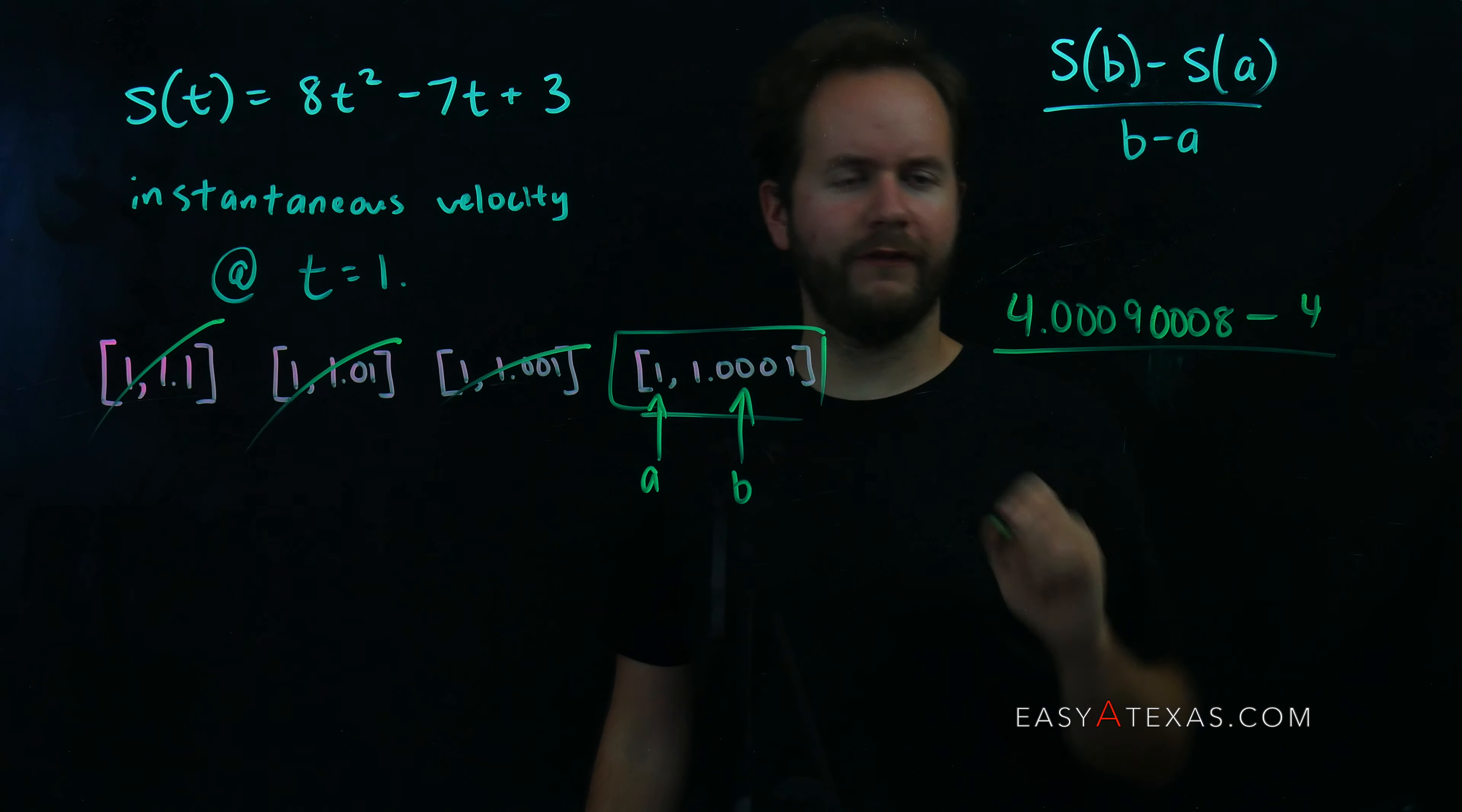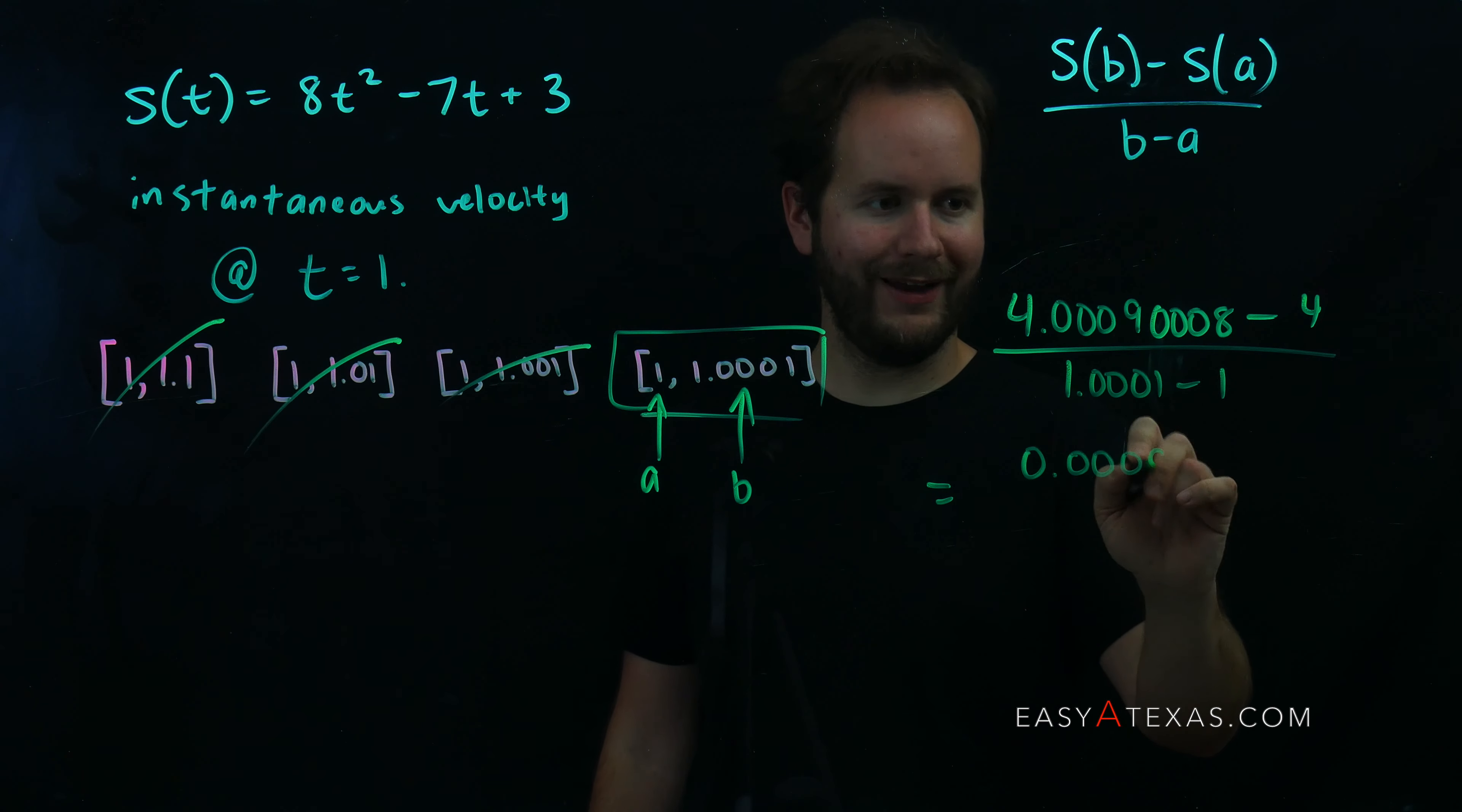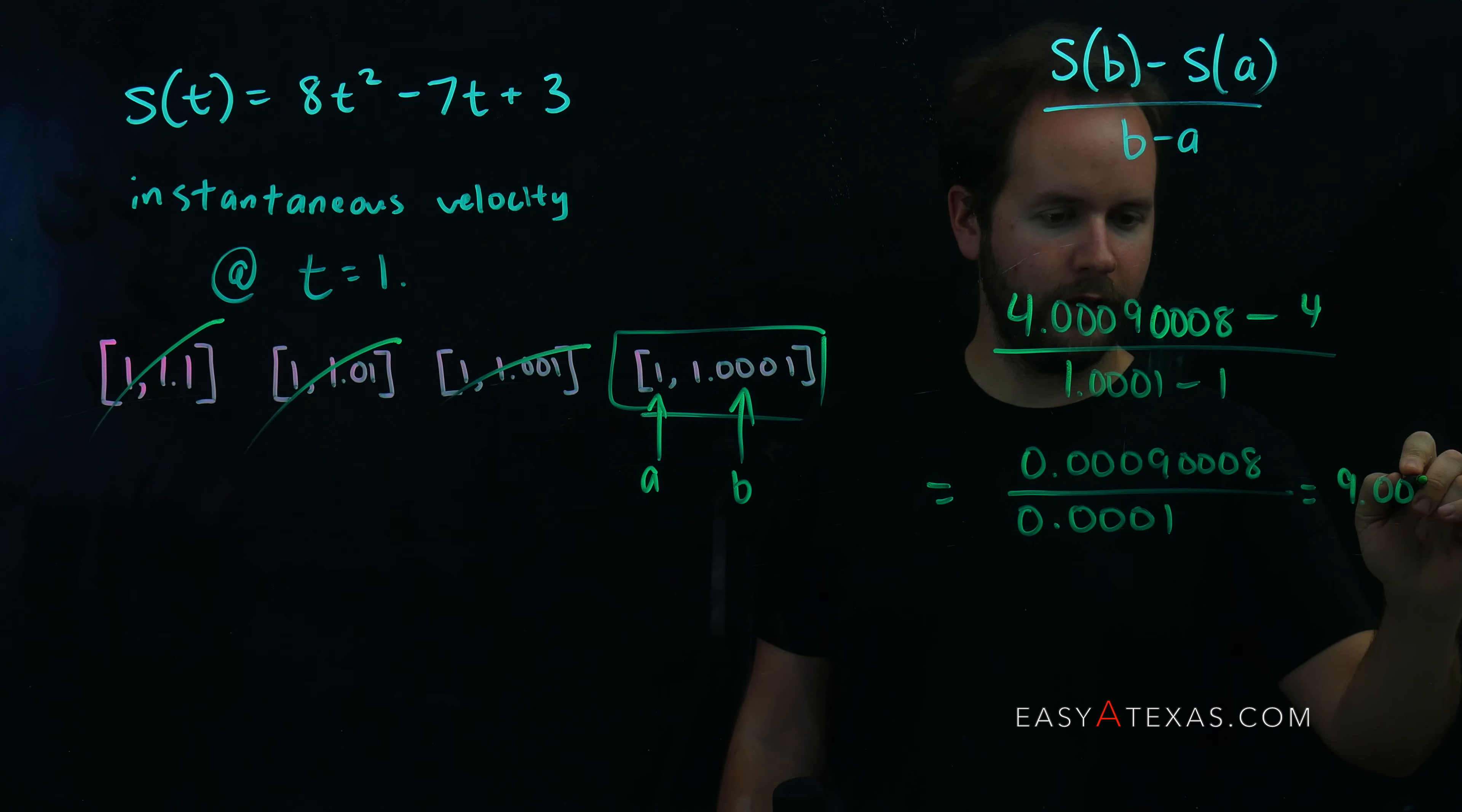all divided by b minus a. So that'd be 1.0001 minus 1, which gives me 0.00090008 over 0.0001, which if I get a calculator or do some quick mental math, it gives me 9.0008.